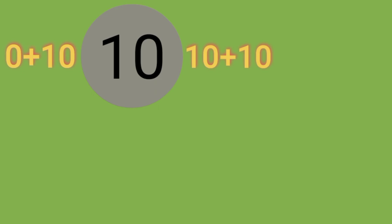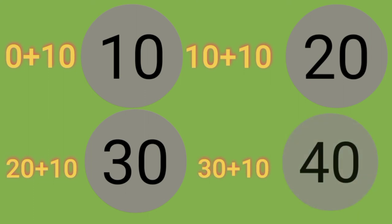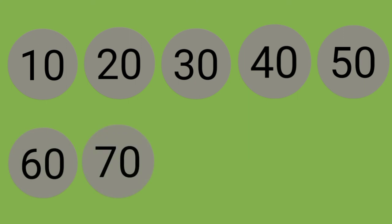10 plus 10 is 20, 20 plus 10 is 30, 30 plus 10 is 40. So it's 10, 20, 30, 40, 50, 60, 70, 80, 90, 100.